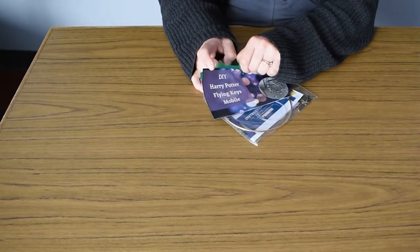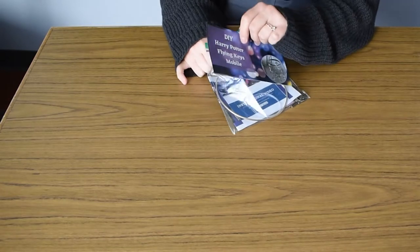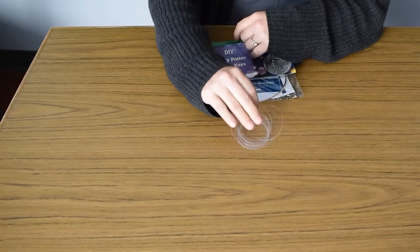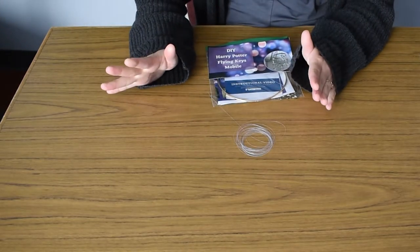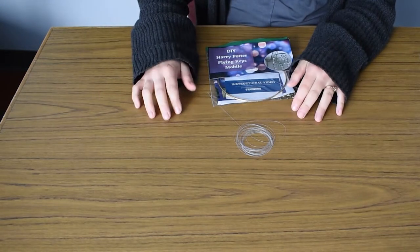And my biggest piece of advice is to be sure to separate your fishing line out when you cut it so that it doesn't become tangled. Because when fishing line becomes tangled, it's almost impossible to get the tangles out.